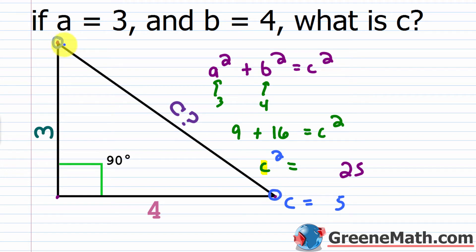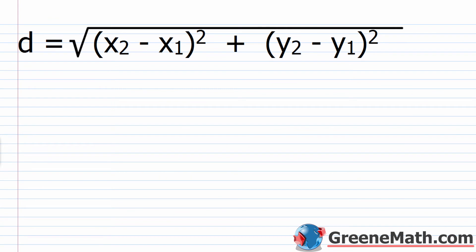We'll have a point here and a point here, and we'll derive a formula solving for the hypotenuse — the unknown distance — using the horizontal and vertical distances we can find. The distance formula is: d equals the square root of (x sub 2 minus x sub 1) squared plus (y sub 2 minus y sub 1) squared. Just like with slope, you can label either point as (x₁, y₁) or (x₂, y₂) — you'll get the same answer either way.